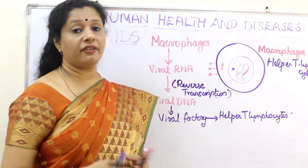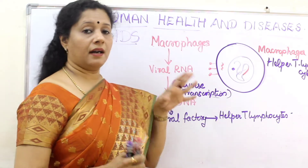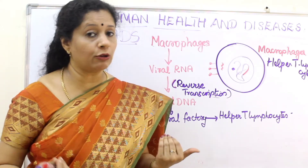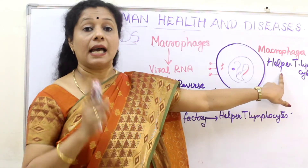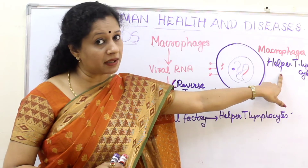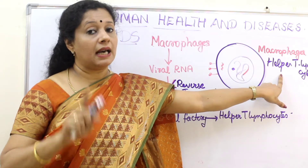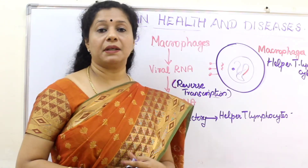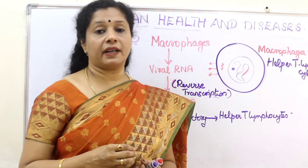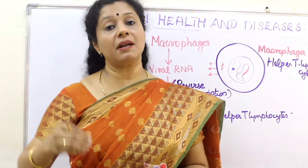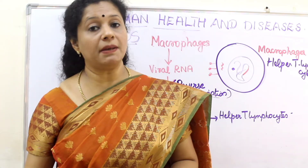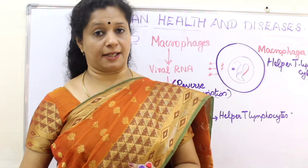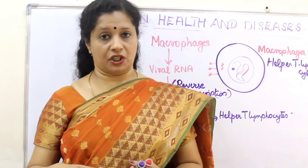Once they multiply in large numbers, they come out of the macrophage. Now they are looking for helper T lymphocytes. The function of helper T lymphocytes is to help B lymphocytes produce antibodies. So HIV goes and attacks helper T lymphocytes. Over a period of time, the helper T lymphocyte count will considerably reduce. Thereby, the patient will not be able to produce antibodies, and acquired immunity is affected — so the immune system becomes deficient.